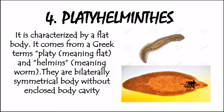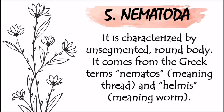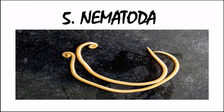Moving on, we also have Nematoda or nematodes. It is characterized by an unsegmented round body. It comes from the Greek terms nematos, meaning thread, and helmis, meaning worm — so thread-like worms. Examples of Nematoda include Ascaris, a parasitic roundworm known as Trichinella, and Caenorhabditis elegans, a soil-inhabiting nematode.